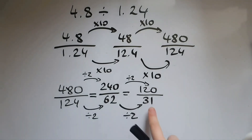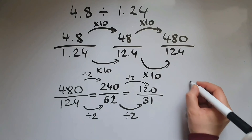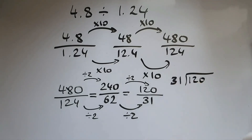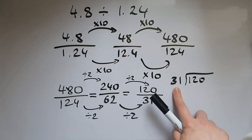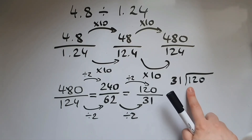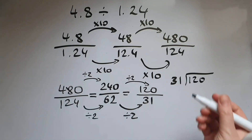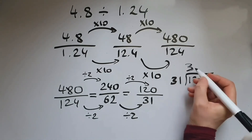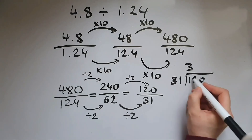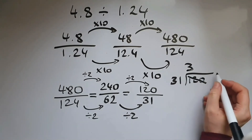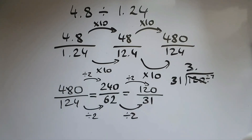As it happens, 31 is also a prime number, so we can't simplify any further. Now we do 120 divided by 31. How many 31s fit into 120? 4 lots of 30 would be 120, but 4 lots of 31 would be more than 120, so we stop at 3 lots. 3 times 31 is 93. What is left? 120 minus 93 is 27. We put a decimal point and add a 0.